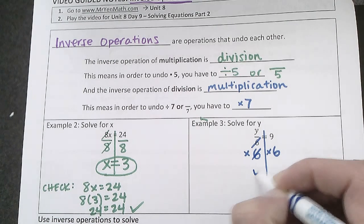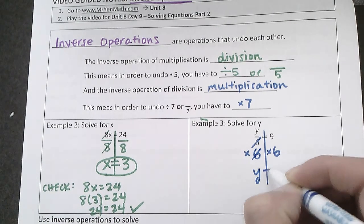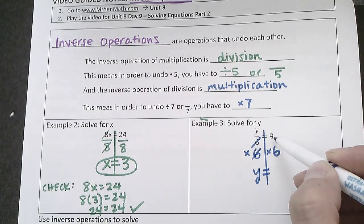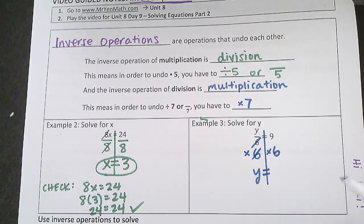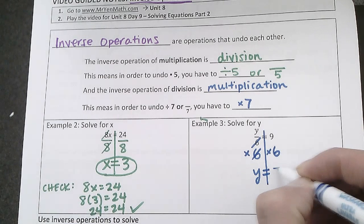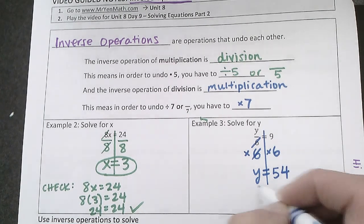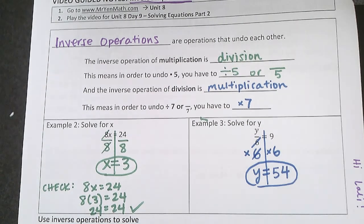And I'm just left with y on this side equals, and then 9 multiply that by 6. So 9 times 6 is 54, and there's my answer.